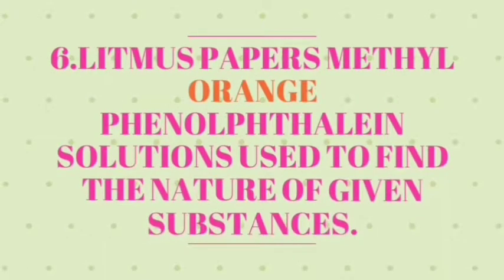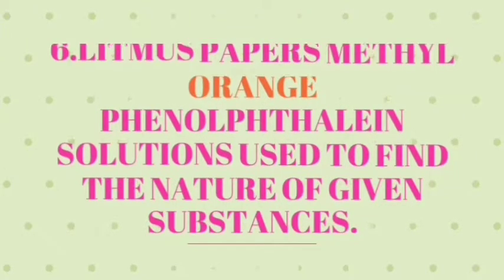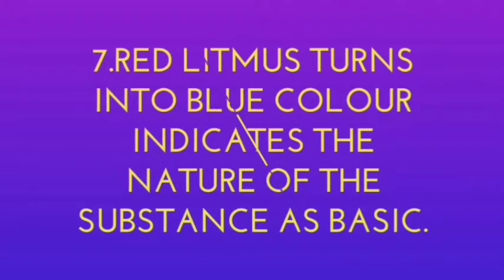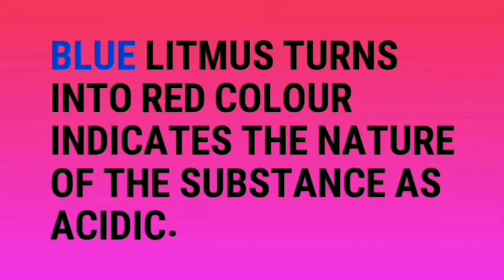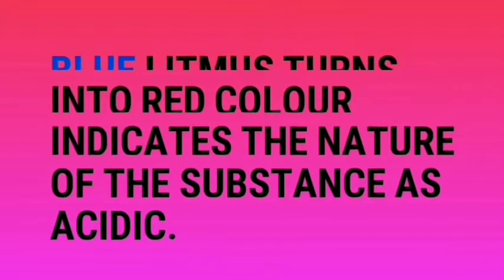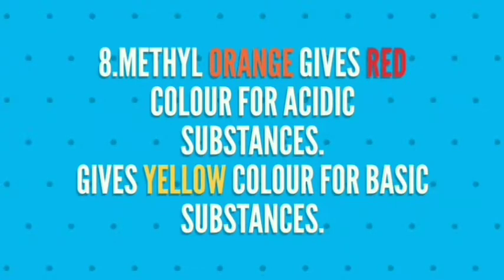Litmus papers, methyl orange, and phenolphthalein solutions are used to find the nature of a given substance. Red litmus turns blue — indicates the substance is basic. Blue litmus turns red — indicates the substance is acidic. Methyl orange gives red color for acidic substances and yellow color for basic substances.